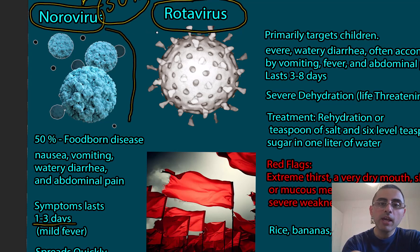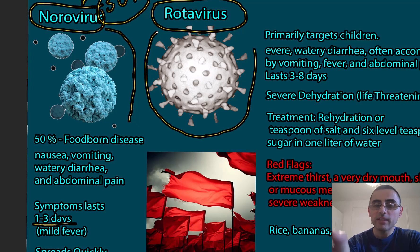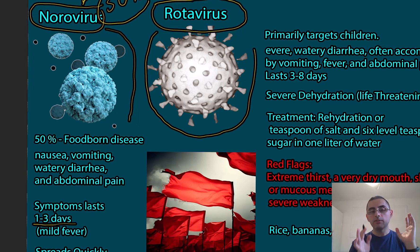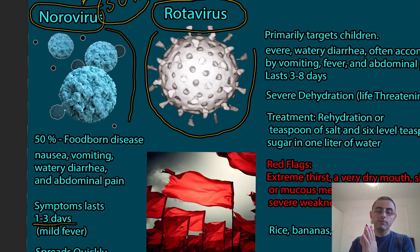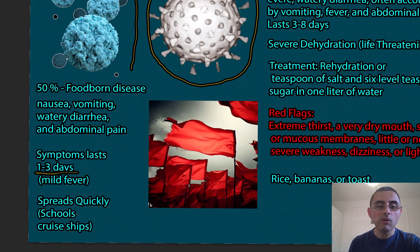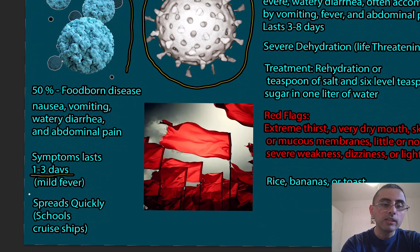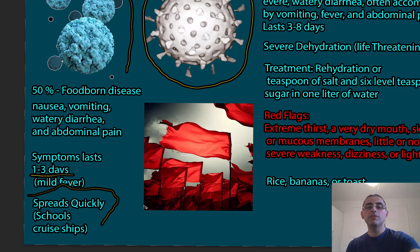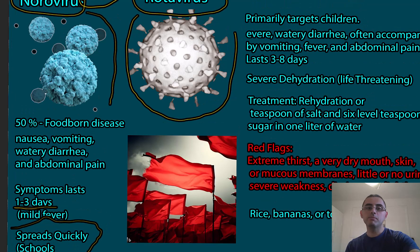Rotavirus primarily affects kids — that's the most important difference. Norovirus affects all age groups, while rotavirus affects predominantly kids. Norovirus also spreads quickly, especially in close spaces such as cruise ships and schools where there is communal sharing of meals.